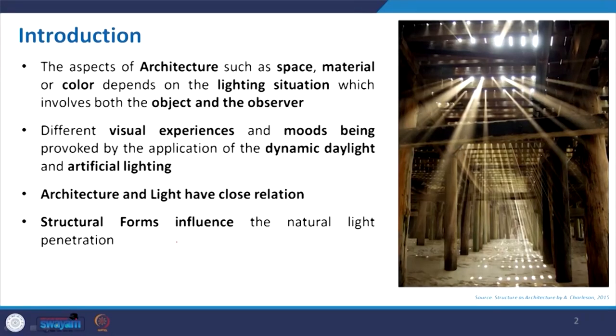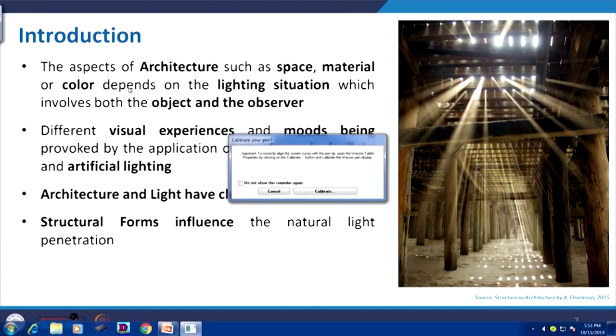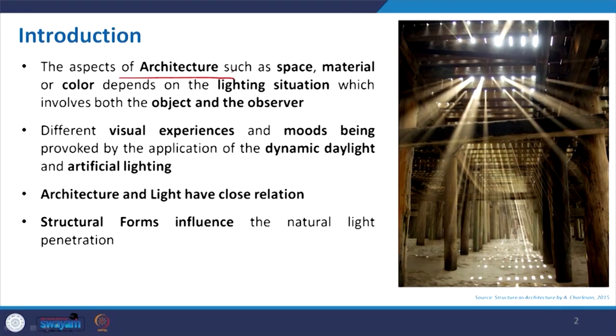At the beginning, if we recap what architecture is, many definitions come into picture — it is articulation of space, represented by texture, different components of design, colour, and shape. The aspects of architecture such as space, material, and colour depend on the lighting situation, which is obviously true. In absence of light we cannot actually see any objects, and we can even change the colour of an object with different lighting through filtration.